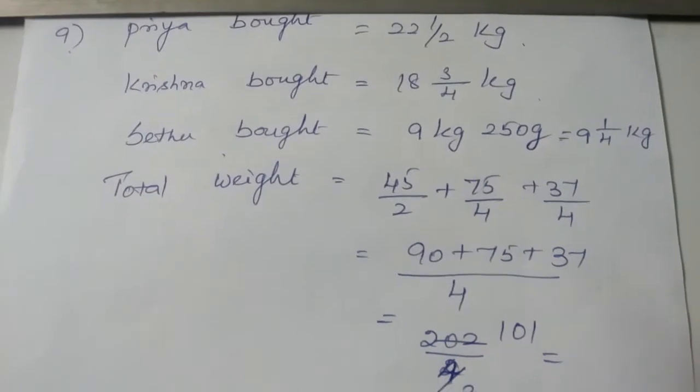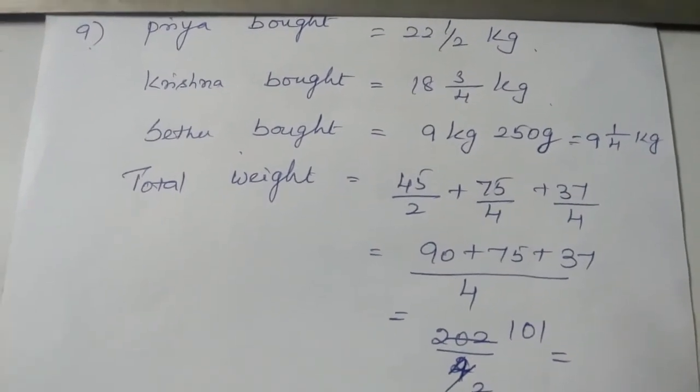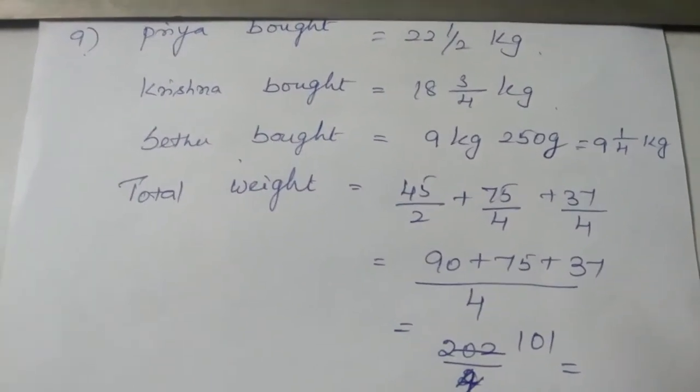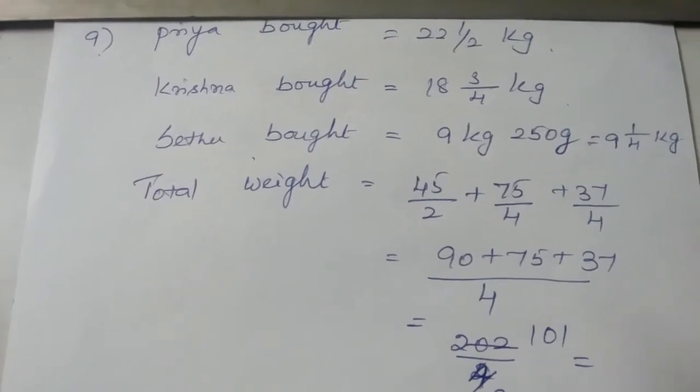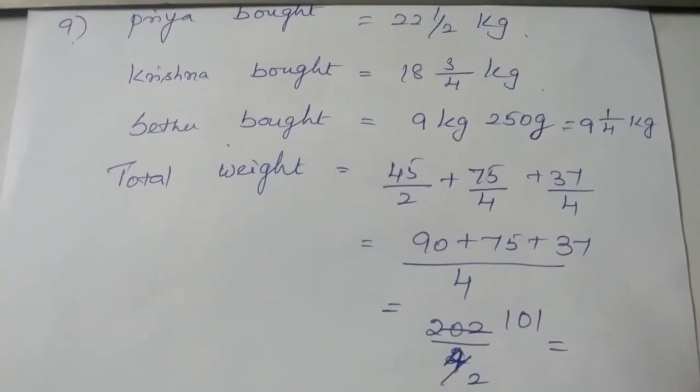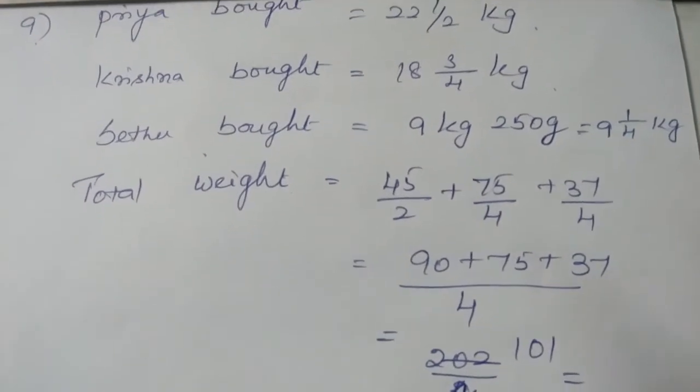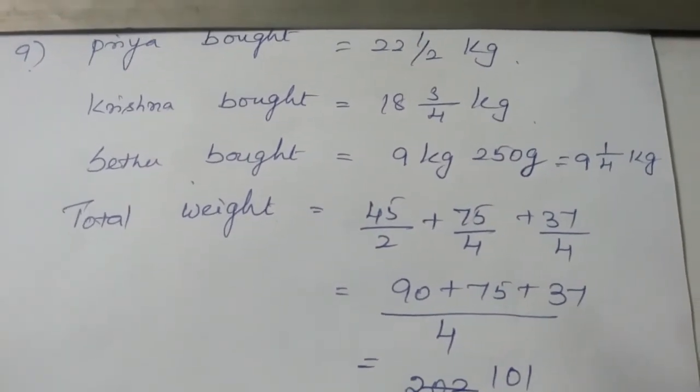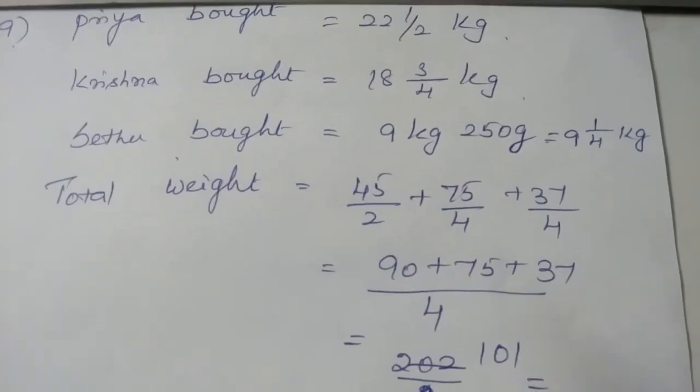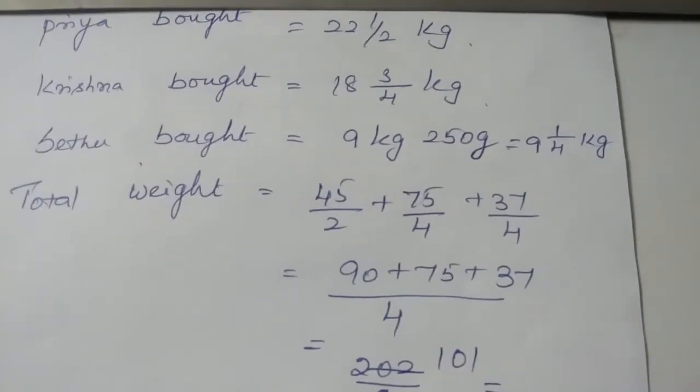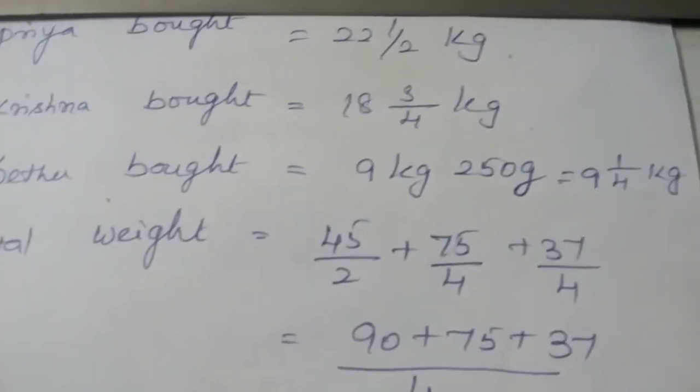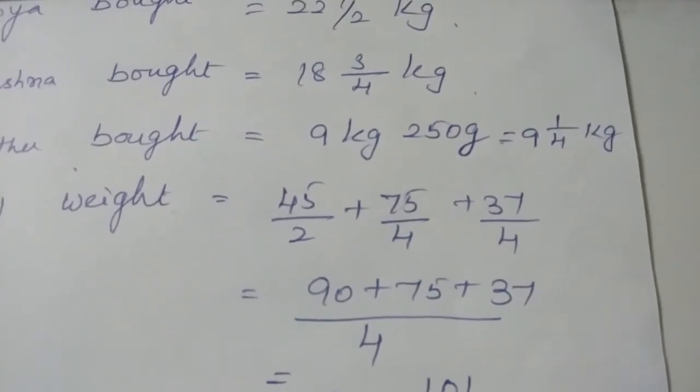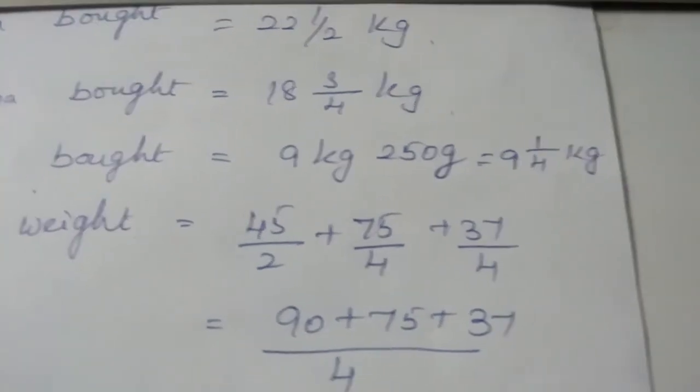The ninth question is Priya bought 22.5 kg of onion and Krishna bought 18 3/4 kg of onion and Setu bought 9 kg 250 grams of onion. The thing is find the total weight of onion they bought. Whenever the total is asked, it is nothing but we have to add it. So Priya bought 22.5 kg, Krishna bought and Setu bought. Now see here for Setu it is given 9 kilograms 250 grams. You have to write the mixed fraction so that it will be easy for us to add, so 9 1/4 kg.